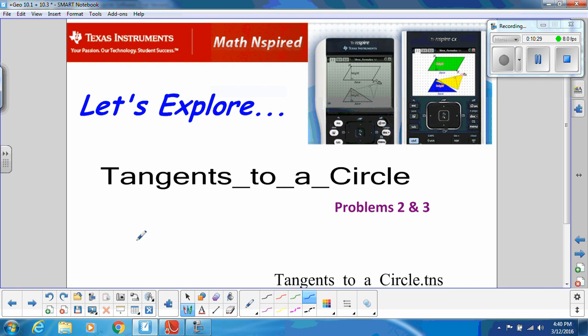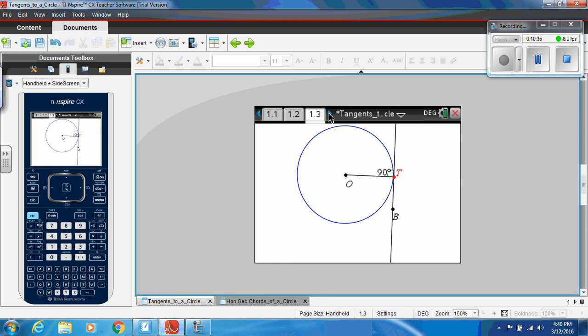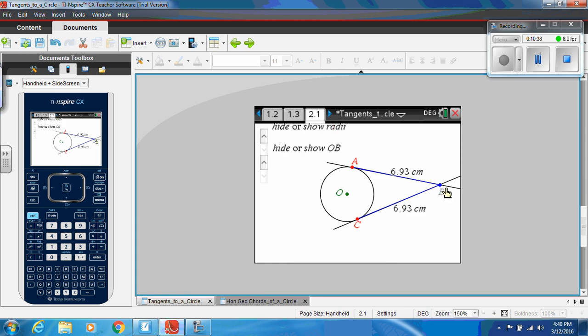So, now we're going to go back to that Inspire document and look at some more things about tangents. So, if we look at tangents that meet outside of this circle. So, you see how BC is a tangent and BA is a tangent. But they both meet at this point B. And do you notice how AB is 6.93 centimeters and BC is 6.93 centimeters. And no matter where I move B, if I move it close or far away, those values stay exactly the same. So that's an interesting result. And I want you to think about why that would happen.